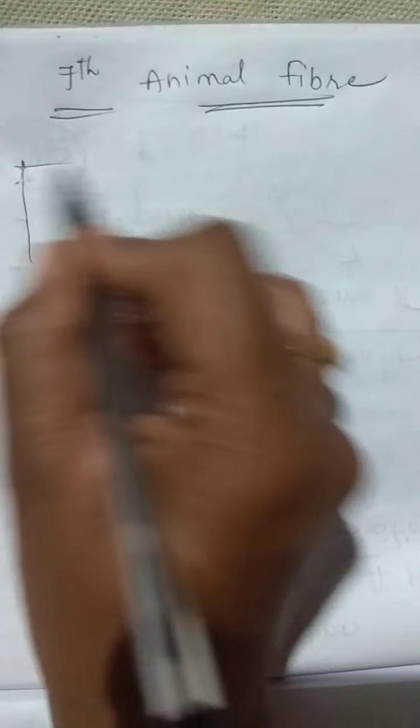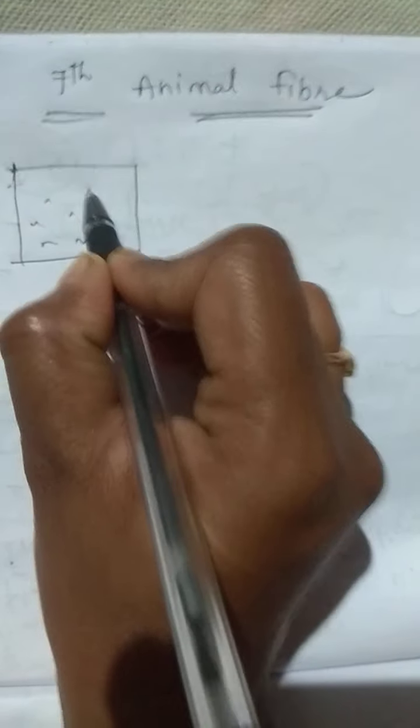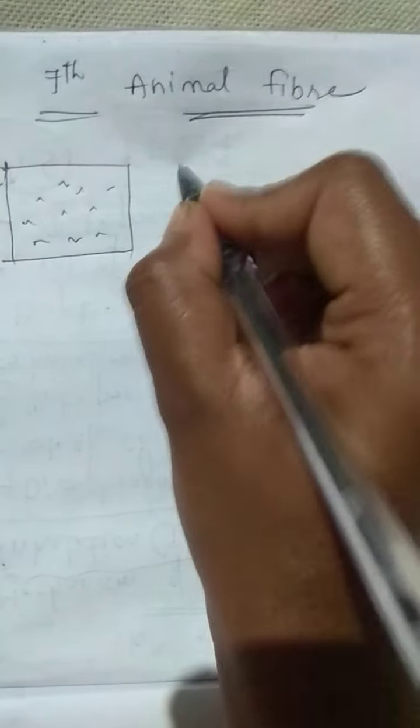So what is the second stage? Eggs hatch into caterpillars. So after the eggs hatch, we have a white cloth on a tray. In this tray, we have mulberry leaves.